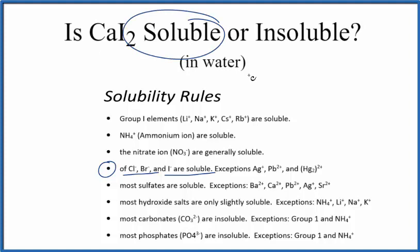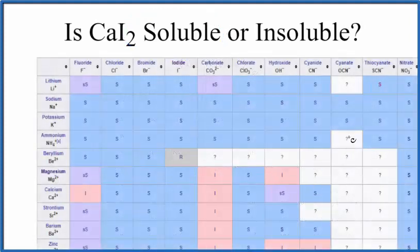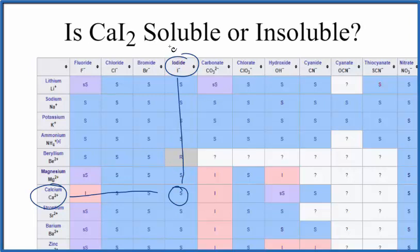We can check that with a solubility table. This is part of a larger solubility table. We go down the positive ions — here's calcium, the calcium ion — and across the top, iodide, I⁻. So we go over and then down, and we see that S. That S means it's soluble. Calcium iodide is soluble in water, and that's just what we saw with the solubility rules.